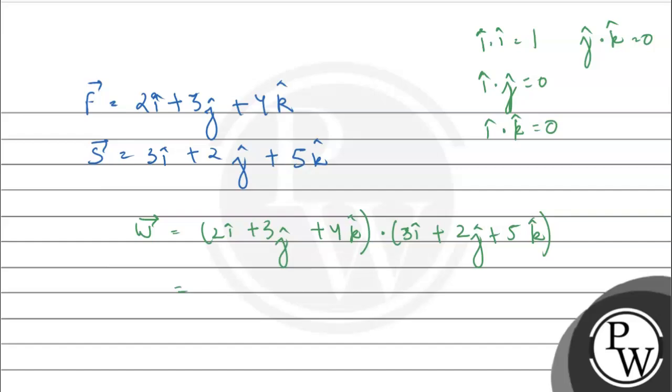So, यहां पे 2 multiply by 3 is 6 plus 3 multiply by 2 is 6 plus 5 multiply by 4 is 20. So, it is 32 joule.